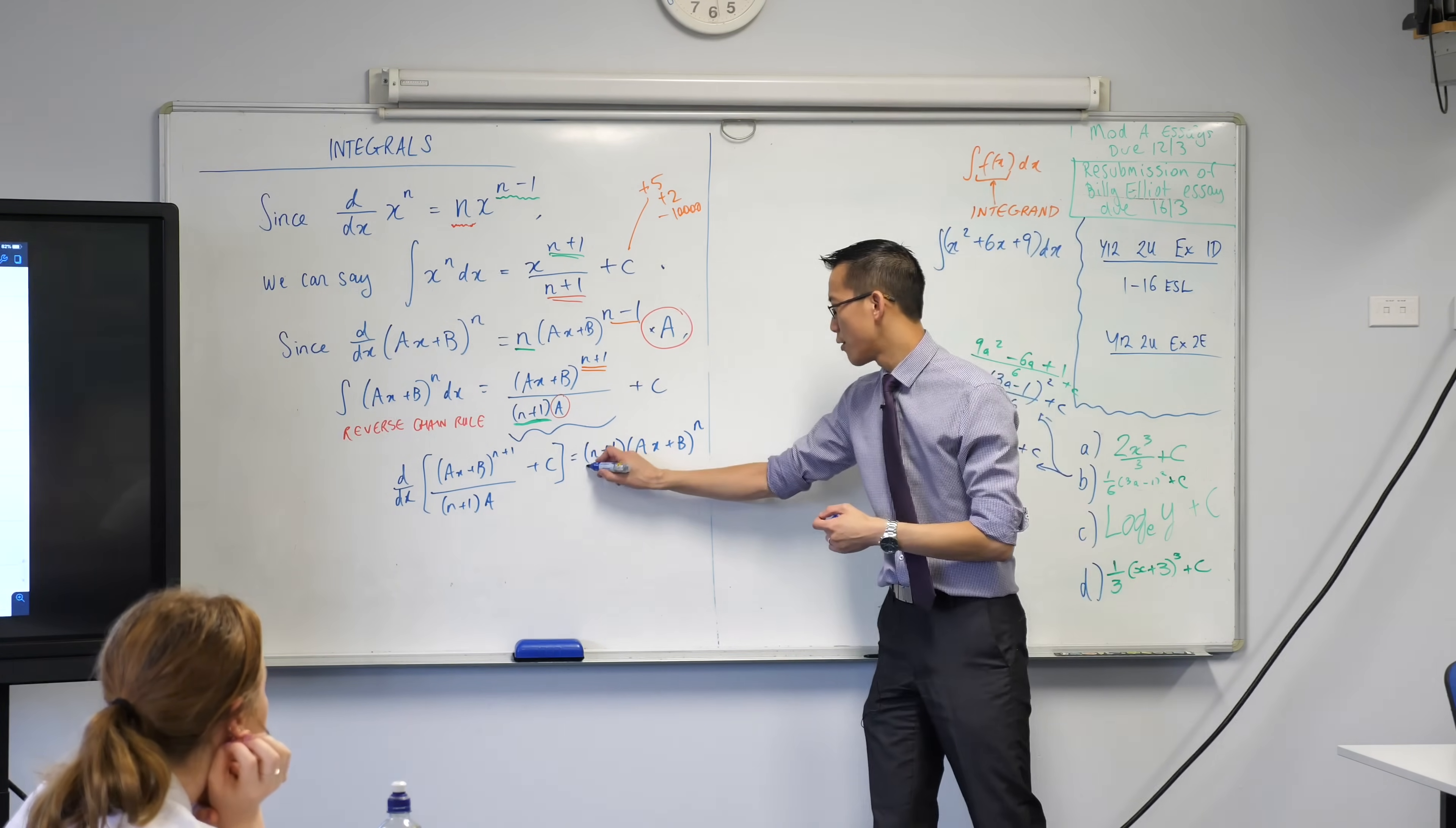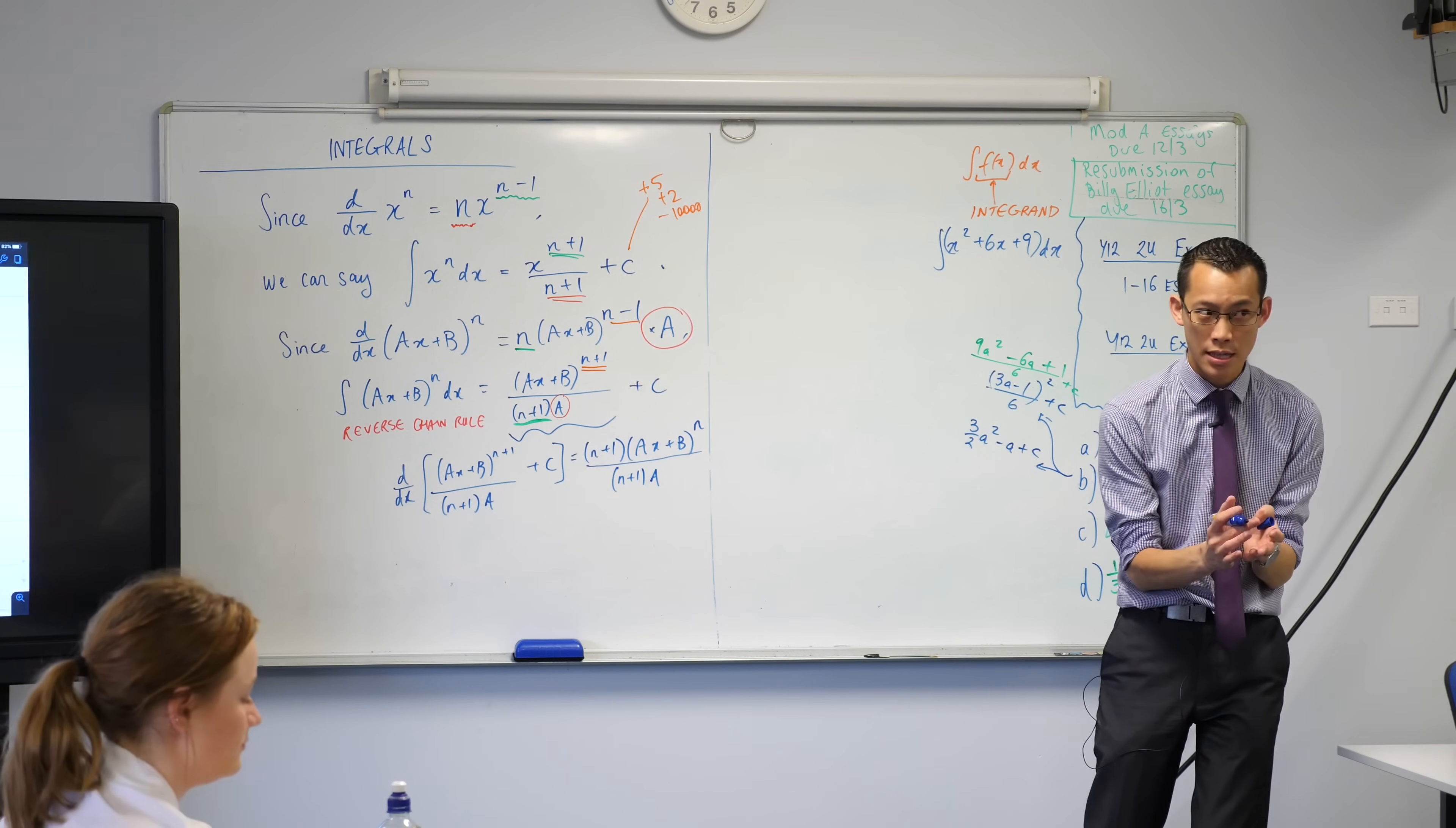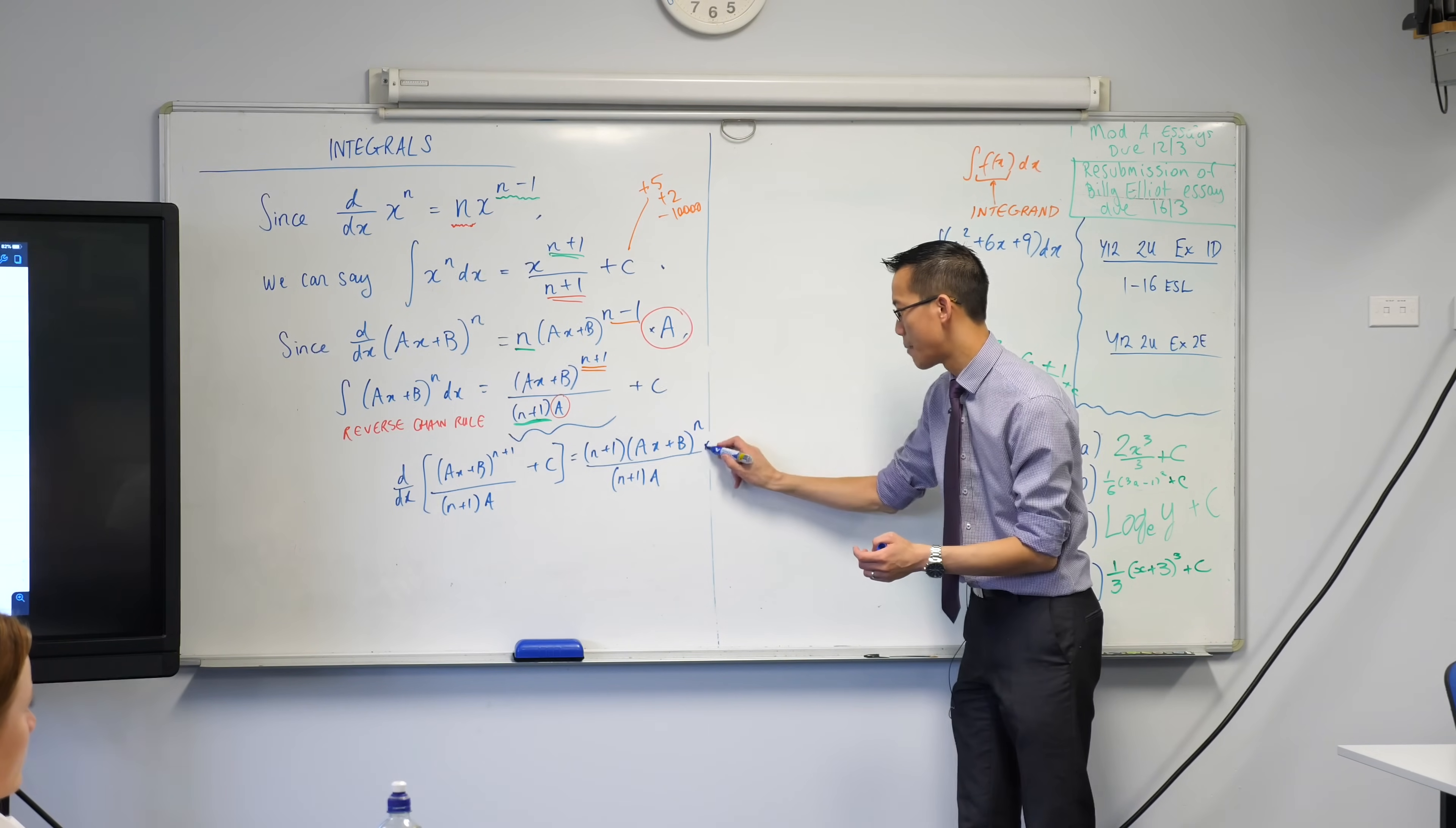All this stuff is still here on the denominator, right? So far, you've only dealt with the outside. Use the chain rule. What's the inside derivative? A. It's A, isn't it? I should actually say it over here. So then I multiply by A.